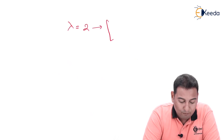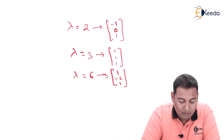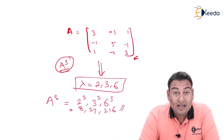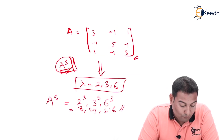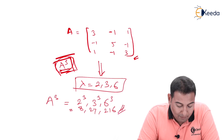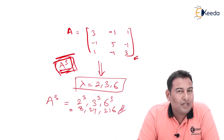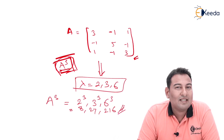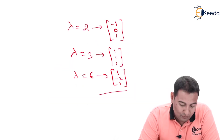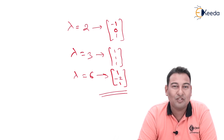The eigenvectors of A are: for λ = 2, the vector (−1, 0, 1); for λ = 3, the vector (1, 1, 1); and for λ = 6, the vector (1, −2, 1). Since eigenvectors of A and any function of A are the same, the eigenvectors of A³ are identical to those of A. So the eigenvalues change, but the eigenvectors remain the same.